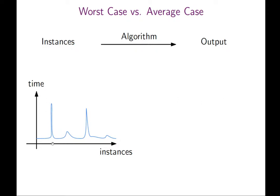It might be that for some instances it takes a huge amount of time, but for others it's very fast. Worst case analysis tries to figure out which is the worst instance and for which it takes the largest amount of time.